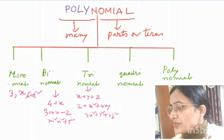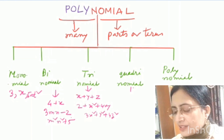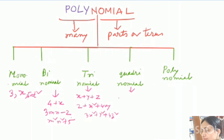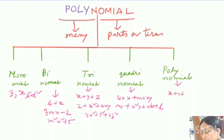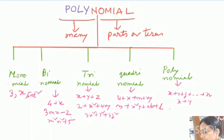A quadrinomial has four terms — for example, 4 + x + m + xy, and another example is 3 + x² + ab + l. Expressions with more terms or higher powers are called polynomials. For example, x + y + z up to n terms, or x + y + z + k — these are all polynomials.